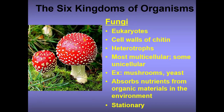Fungi are eukaryotes with cell walls of chitin. They are heterotrophs and most are multicellular, though some are unicellular. Examples include mushrooms and yeast. They absorb nutrients from organic materials in the environment and are usually stationary.